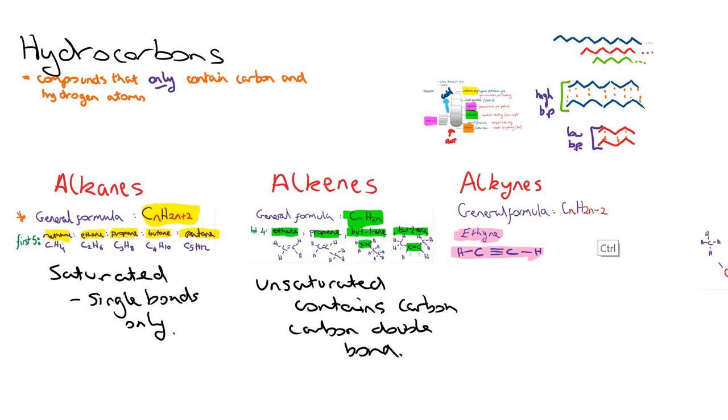So the general formula for the alkynes is CnH2n-2 this time. But as I said, the only one you need to know is ethyne. Again, that would be an unsaturated molecule because it doesn't contain all carbon-carbon single bonds. This time it has a carbon-carbon triple bond.